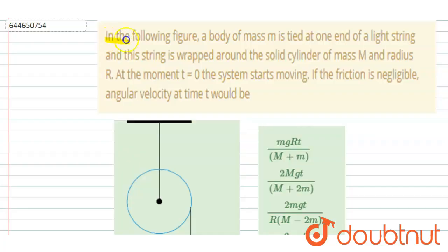Hello everyone. In the following figures, a body of mass M is tied at one end of a light string. And this string is wrapped around the solid cylinder of mass capital M. The radius is R. At the moment t equals 0, the system starts moving.